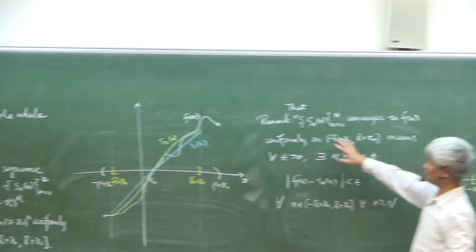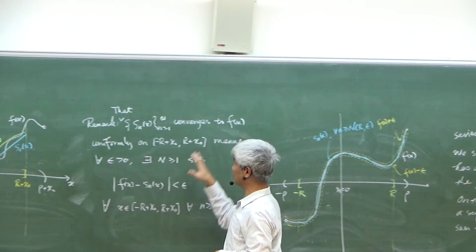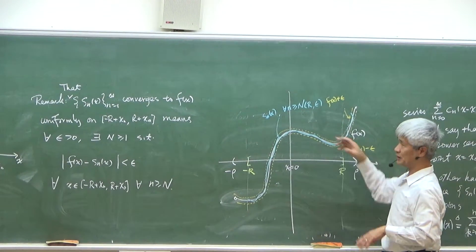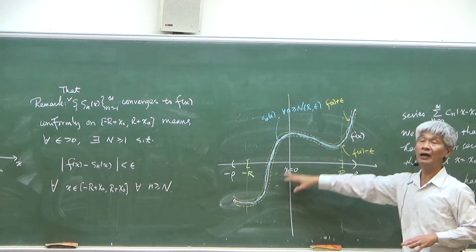I interpret what is the meaning of uniform convergence. It is better to show the uniform convergence in terms of this diagram.